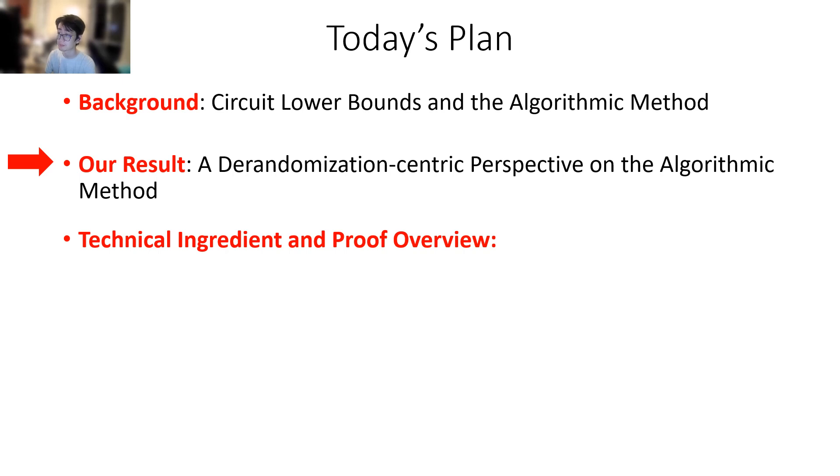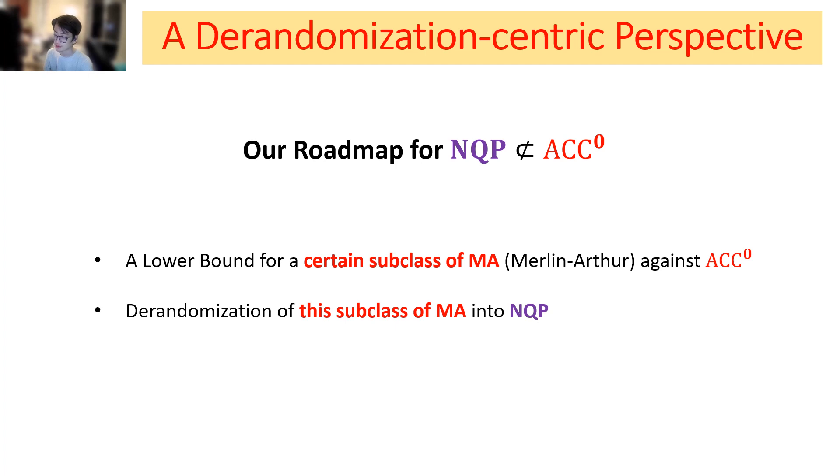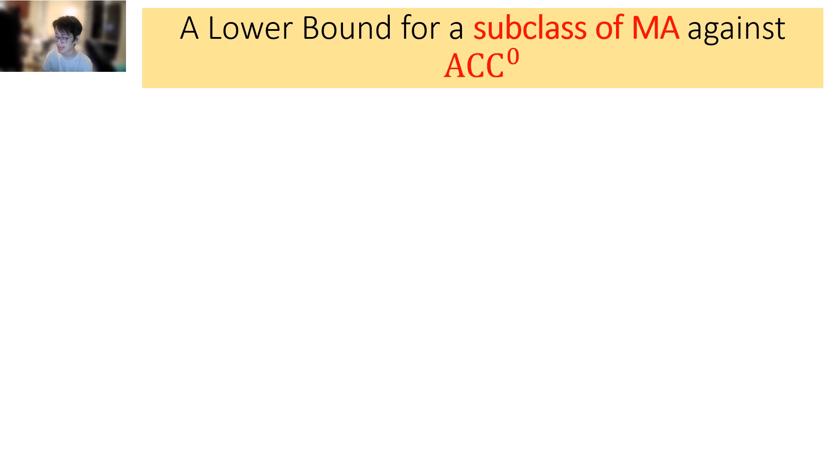Next, let's move to our result. Here is the roadmap for showing NQP not in ACC^0 following our derandomization-centric perspective. First, I'm going to prove a lower bound for a certain subclass of MA. Here, MA denotes Merlin-Arthur protocols, which I'm going to define in a moment, against ACC^0. Next, we're going to derandomize this subclass of MA into NQP. Then we'll have a hard language in NQP against ACC^0, which is exactly what we want. We begin by the first step, a lower bound for a subclass of MA against ACC^0.